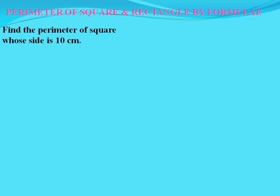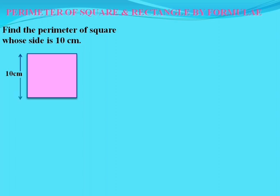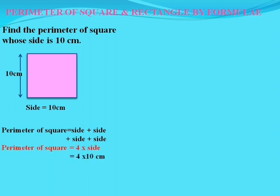Now let's move forward to the next topic: perimeter of square and rectangle by formulae. Find the perimeter of a square whose side is 10 cm. The perimeter of a square equals side plus side plus side plus side, which is the sum of all four sides. We can write it as: perimeter of square equals 4 times side. So 4 times 10 cm becomes 40 cm.